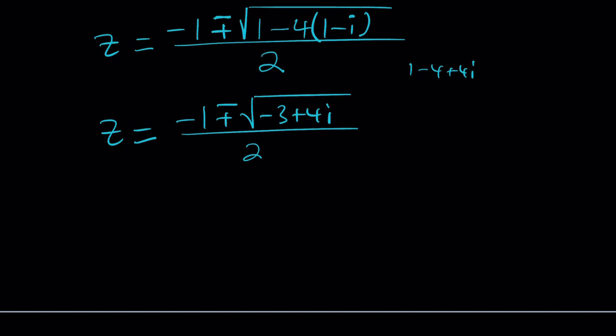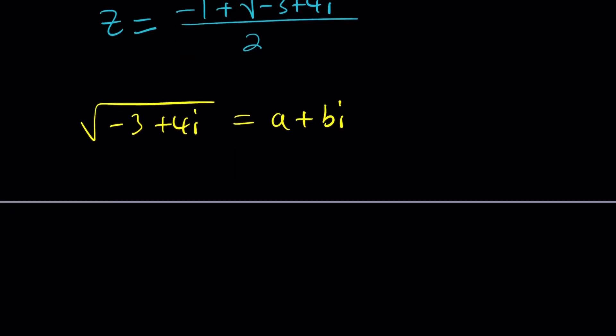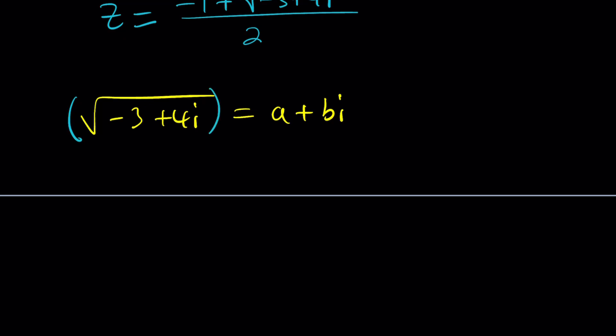Okay. Can we square root negative 3 plus 4i easily? Let's think about it. There's different ways to find the square root of a number. First method is, there's a formula, but I don't think you want to memorize it. Set it equal to a plus bi, which is the name of this channel, by the way, right? And then you can square both sides and try to find the a and b values.